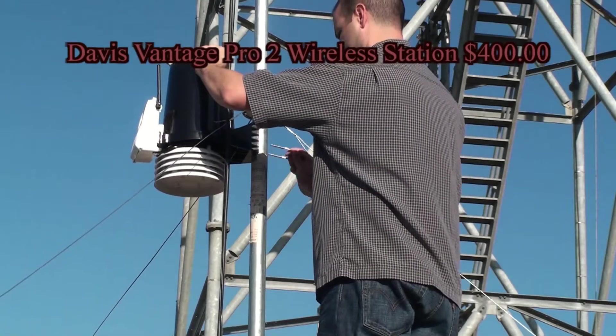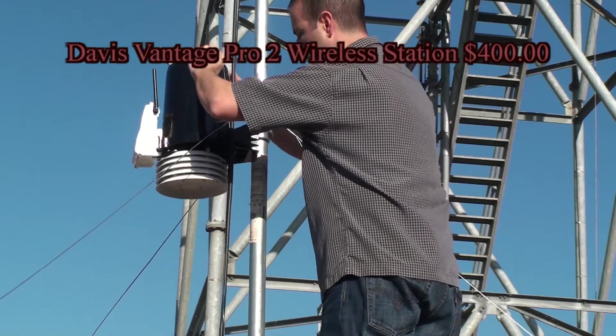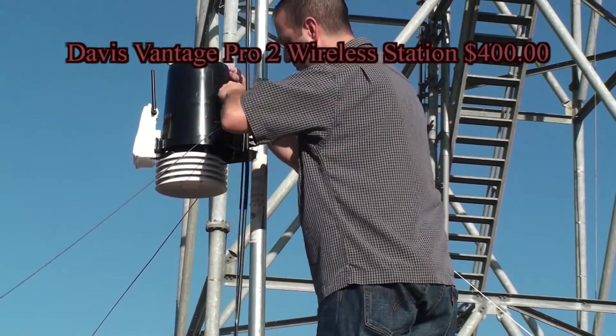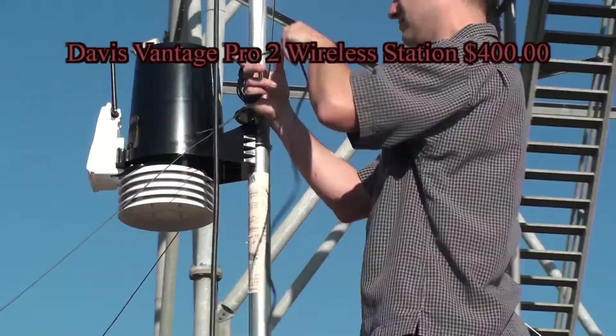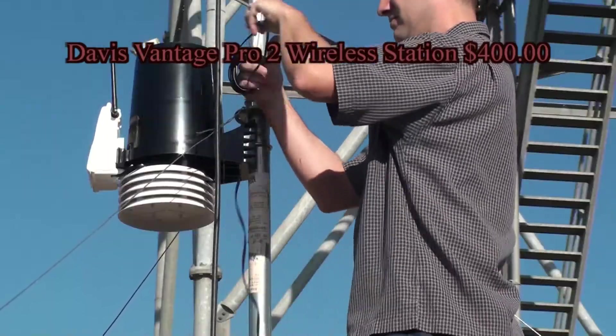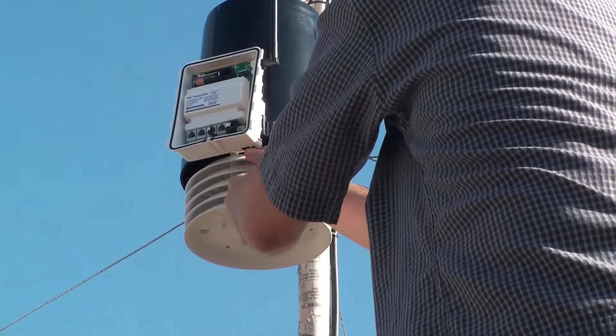With the mast fully raised, we can now install the rest of the weather station sensors. All hardware and instructions on how to do this are included with the Vantage Pro 2. Be sure to plug in the anemometer and secure any excess cable you may have.